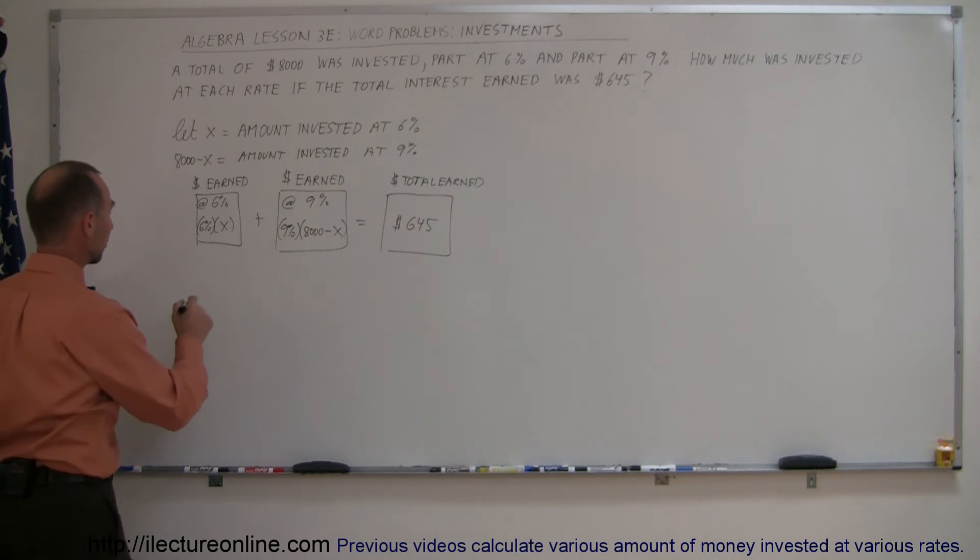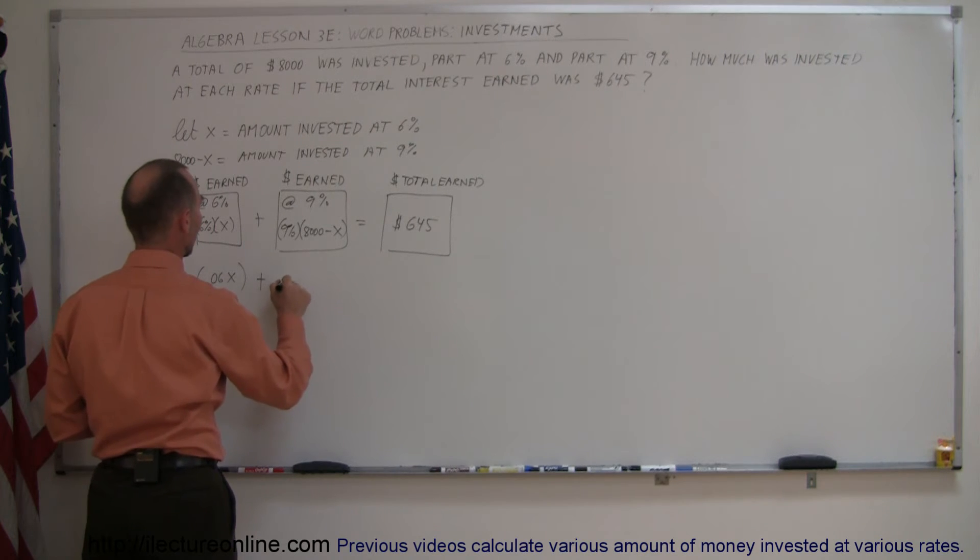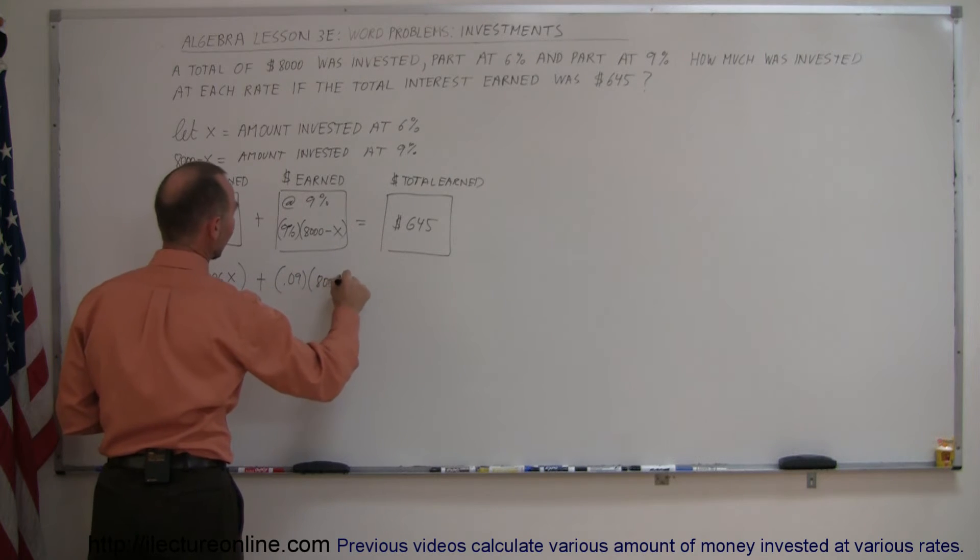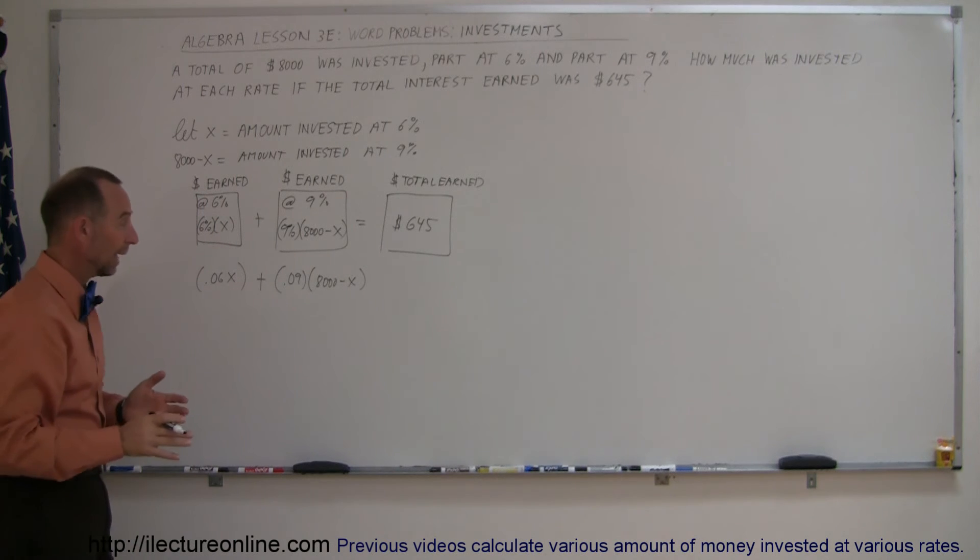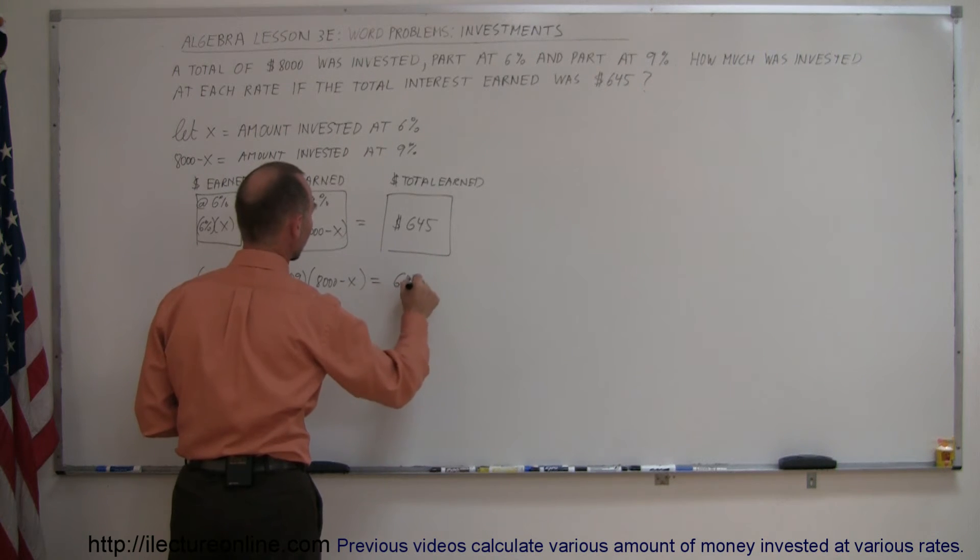Turning that into the equation, we get 0.06X. This represents the amount earned at 6% plus 0.09 times 8,000 minus X. This represents the amount earned at 9%, and that adds up to the total amount of money earned.